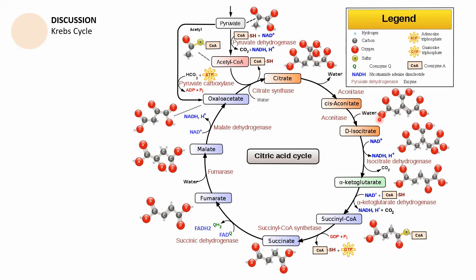Okay, and then with the addition of water and reaction with aconitase again, it will become isocitrate. Okay, and then isocitrate will be reacting with NAD+, and then NAD+ will become NADH, H+, and with the reaction with isocitrate dehydrogenase,